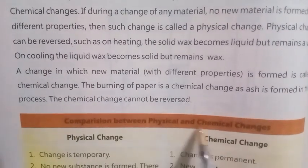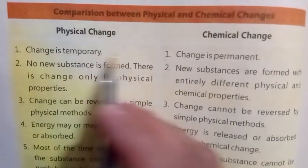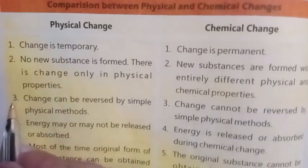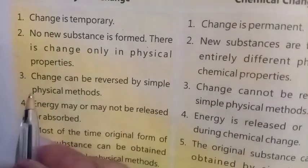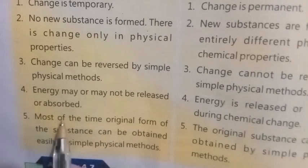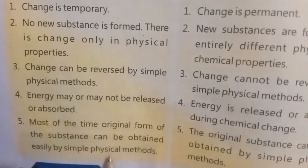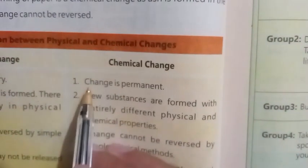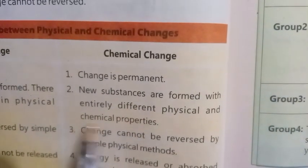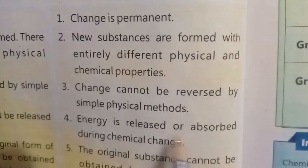Comparison between physical and chemical changes. Physical change: number one, change is temporary; number two, no new substance is formed, there is change only in physical properties; number three, change can be reversed by simple physical methods; number four, energy may or may not be released; number five, the original form of the substance can usually be obtained by simple physical methods. Chemical change: number one, change is permanent; number two, new substances are formed with entirely different physical and chemical properties; number three, change cannot be reversed by simple physical methods; number four, energy is released or observed.